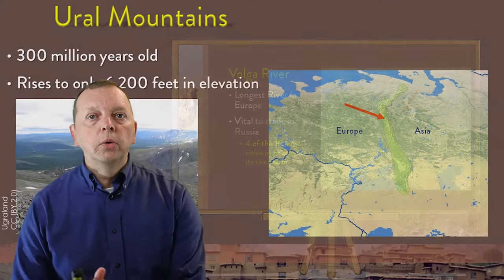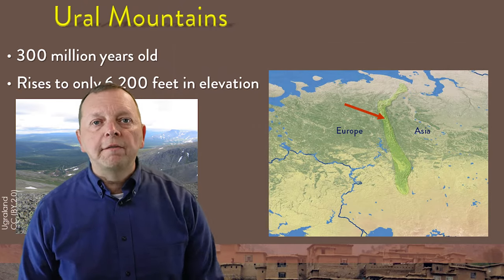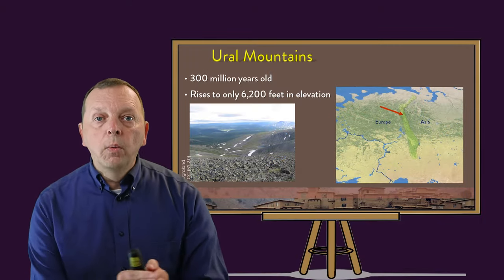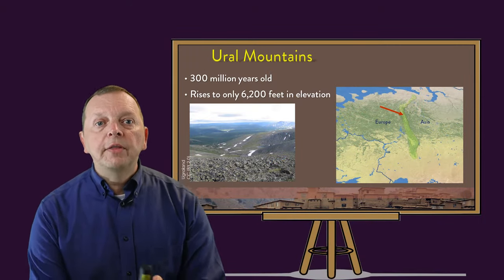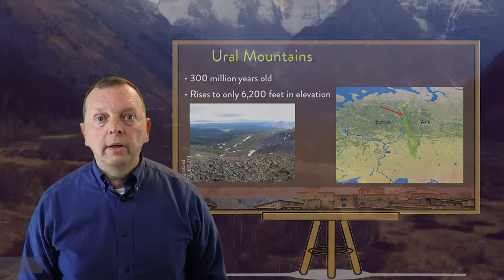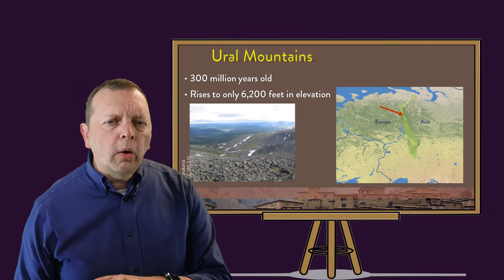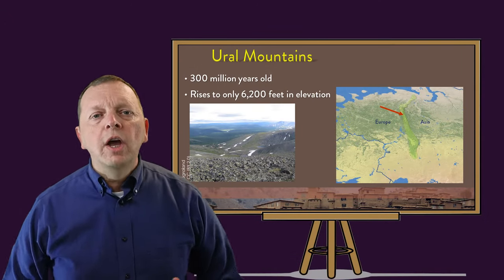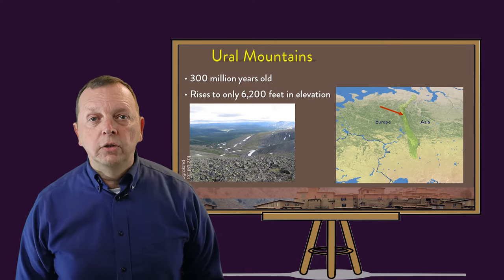If we continue east, we find the Ural Mountains, which are the mountains that divide Europe and Asia. Everything west of the Urals is in Europe, and everything east is in Asia. While the Urals are not quite as old as the American Appalachian Mountains, at 300 million years old, they are old. They also are about the same height as the Appalachians, rising to an elevation of about 6,200 feet.